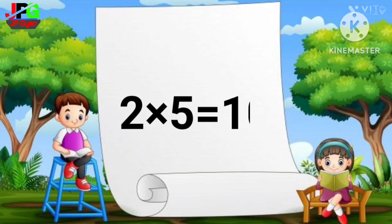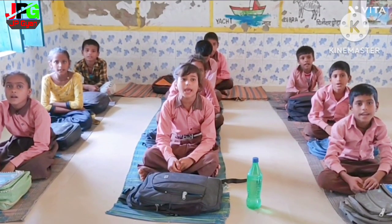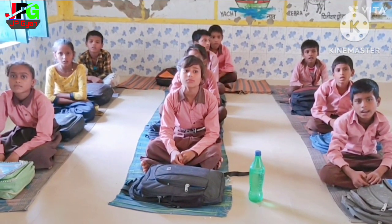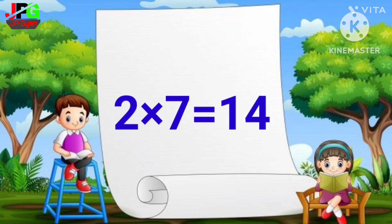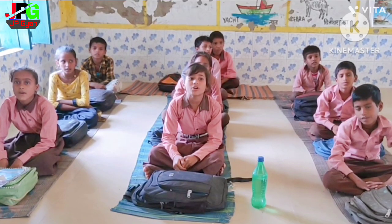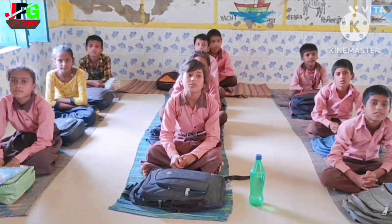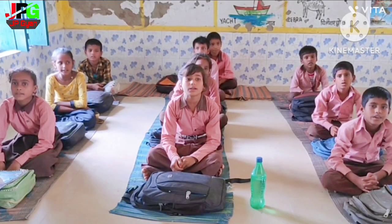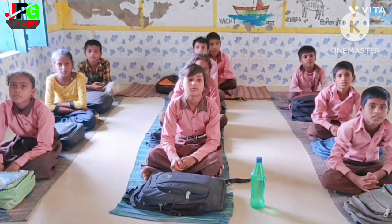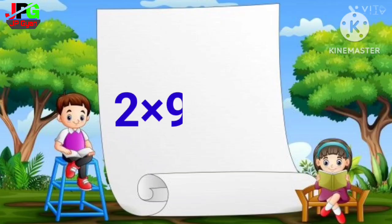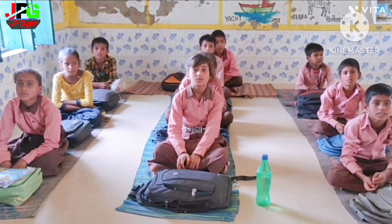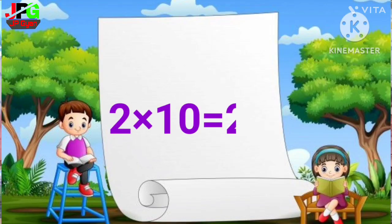2 5s are 10, 2 6s are 12, 2 7s are 14, 2 8s are 16, 2 9s are 18, 2 10s are 20.